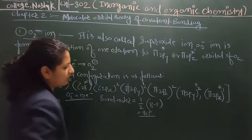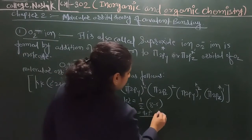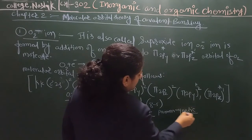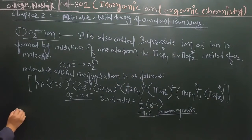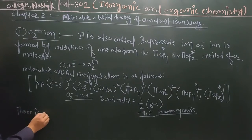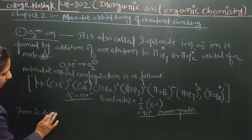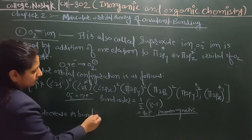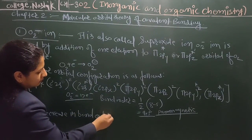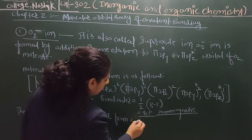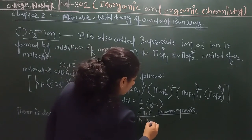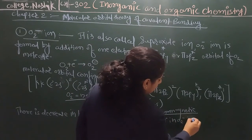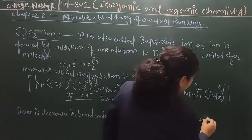For O2 minus ion there is a total of 17 electrons. The bond order is equal to half into the number of bonding minus number of anti-bonding molecular orbitals, giving a bond order of 1.5. O2 minus ion is also paramagnetic. There is a decrease in bond order from 2 in O2 to 1.5 in O2 minus ion, and bond length increases.